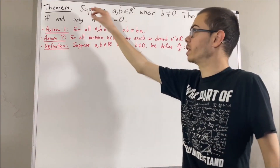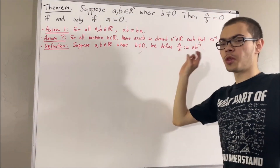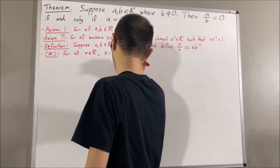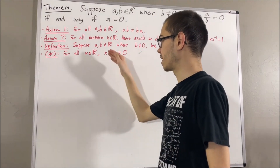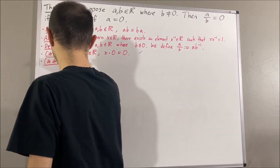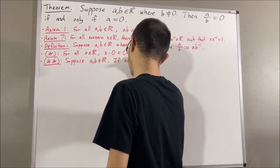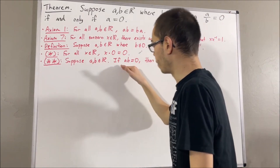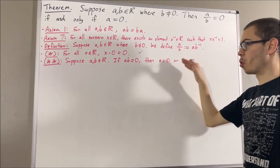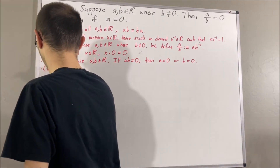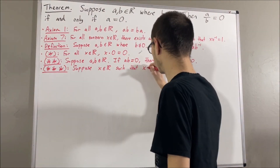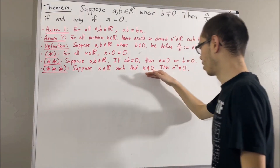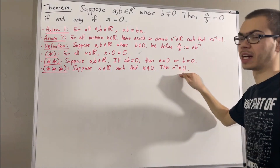Now, in proving this theorem, we're going to be using three preliminary results which we have proven. We have proven, for all real numbers x, x times 0 is equal to 0. We have also proven, given real numbers a and b, if a times b is equal to 0, then a is equal to 0 or b is equal to 0. We have also proven, given a non-zero real number x, the reciprocal of x is also non-zero.